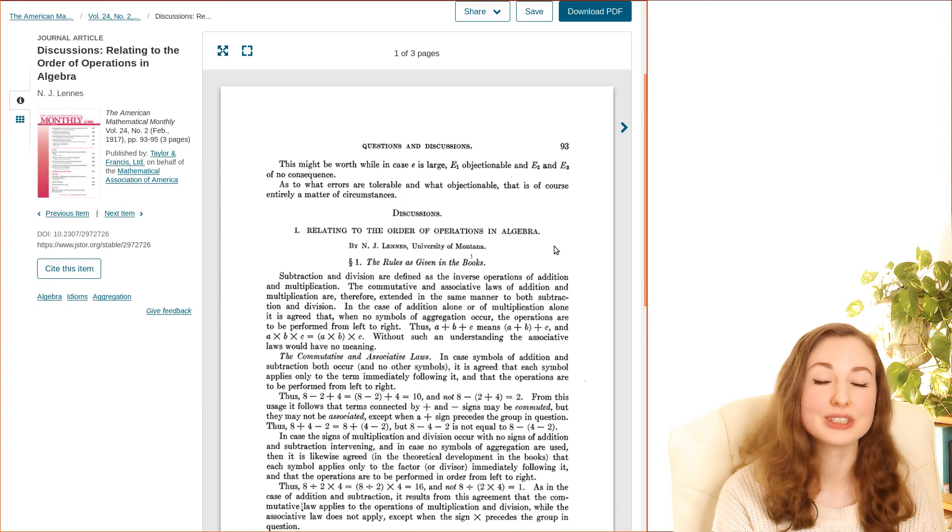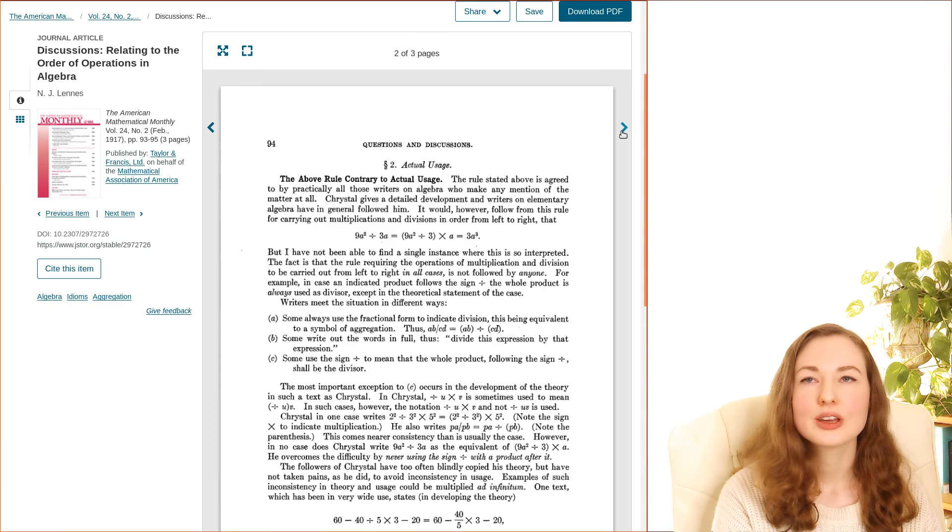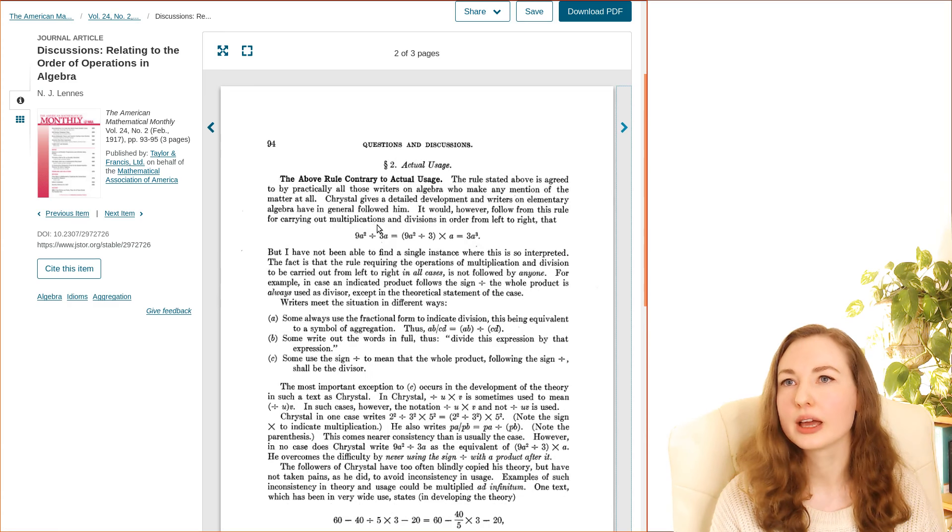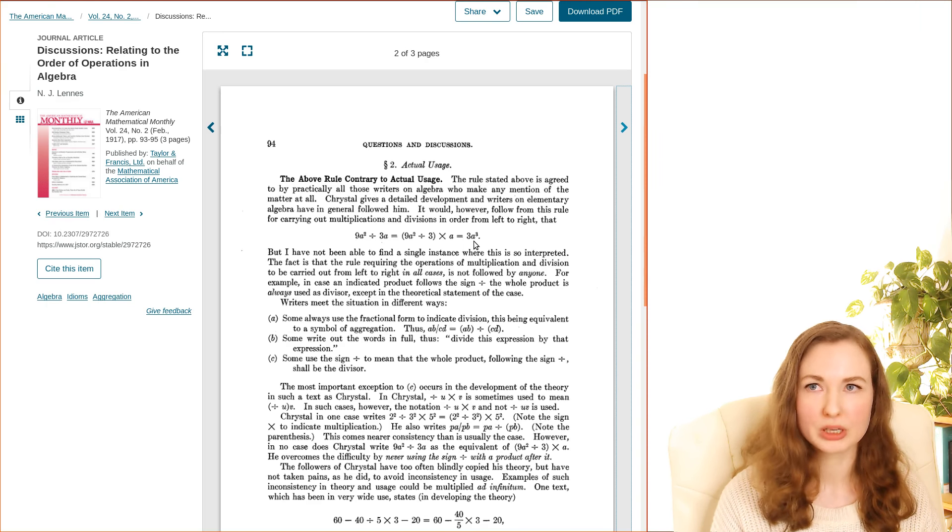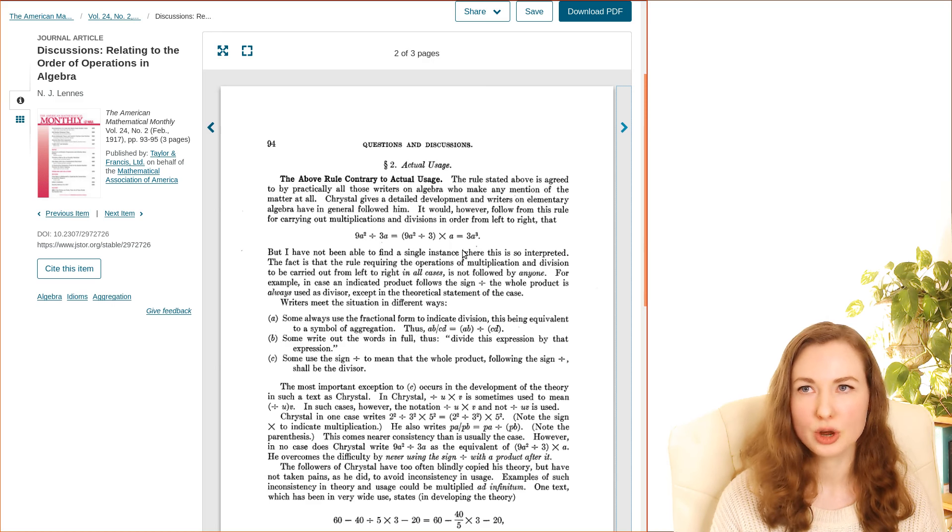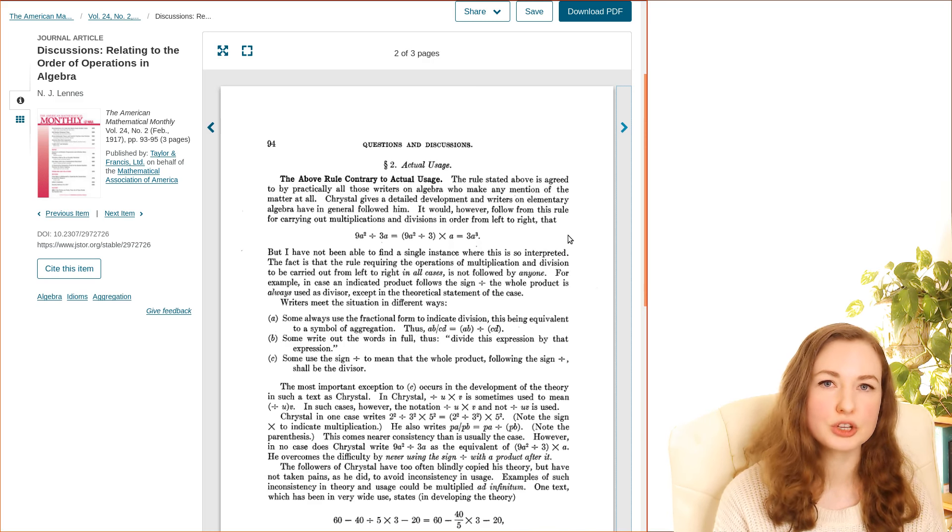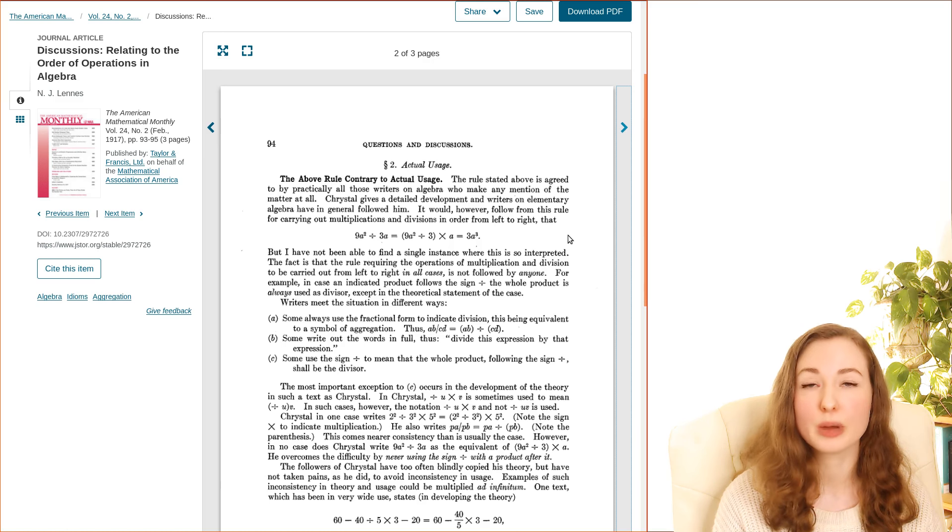But some authors of the time did notice the contradiction. There's this article by N.J. Lennes who was pointing out that the rule stated in these books is a contradiction with the actual usage. So he was saying like if we actually follow that rule, then you would find that for example 9a squared divided by 3a would equal 3a cubed if you use the rule that's written in the books, but no one would interpret it in that manner. So the point I want to hammer home here is that juxtaposition going before division was already well established well before anyone came up with this idea of PEMDAS.